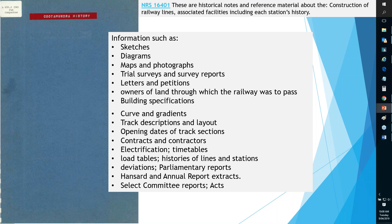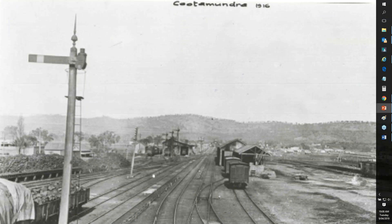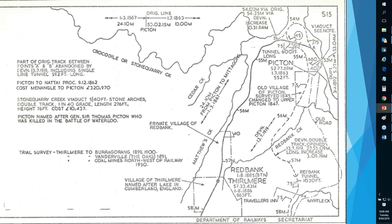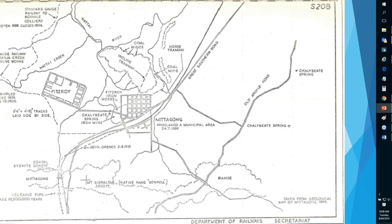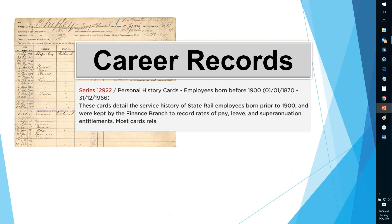In a sense it's history already written, provided you take into account it was created in the 1960s and doesn't continue beyond that. Here's a sample from the Picton area showing part of the original track between points A and B that was abandoned. You can find all sorts of historical information here, and there's also a sample from Mittagong.